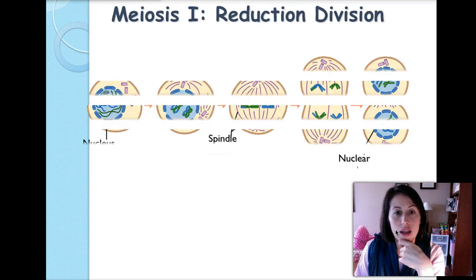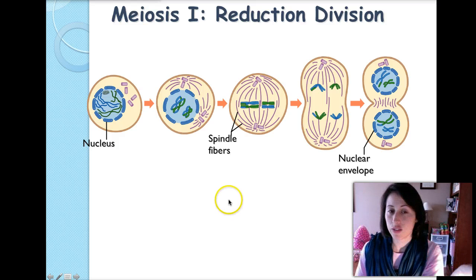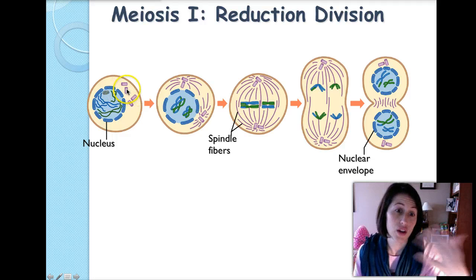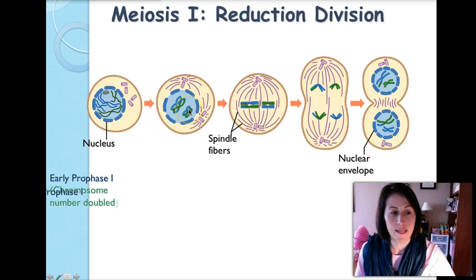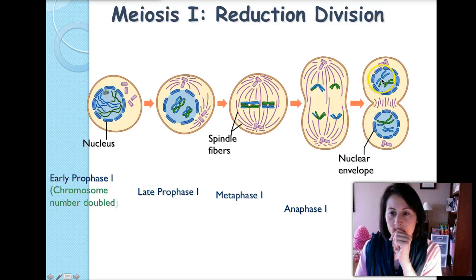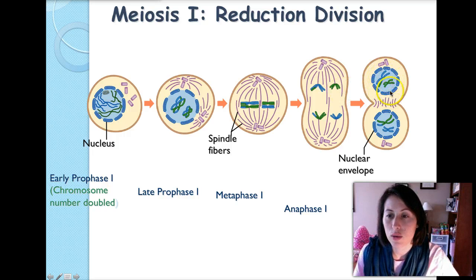Meiosis one is the reduction division — it starts with a diploid cell and ends with a haploid. It starts just as a normal cell with nucleus and centrioles getting ready to divide. In prophase the nuclear membrane starts to break down and spindle fibers begin to form. In metaphase chromosomes line up in the center. In anaphase the chromosomes pull apart, and in telophase the homologous chromosomes have pulled apart and the nucleus starts to restore — ending as haploid cells.